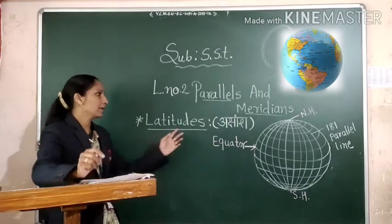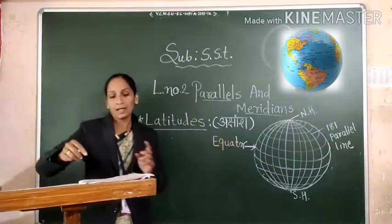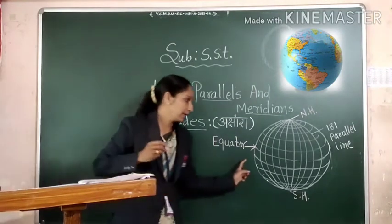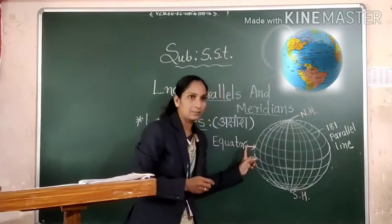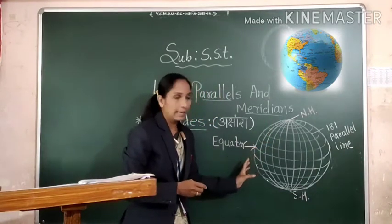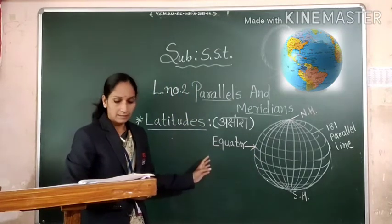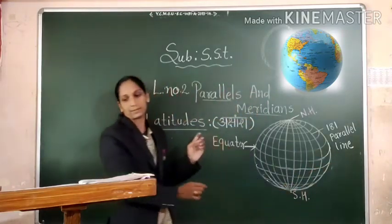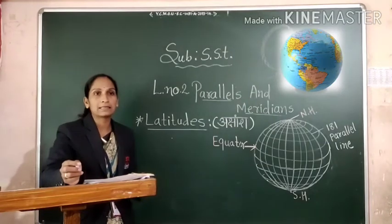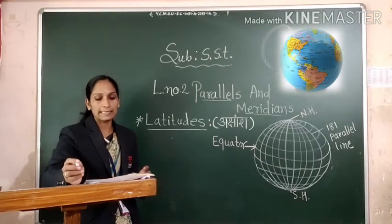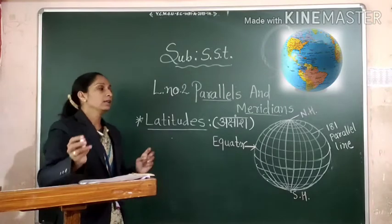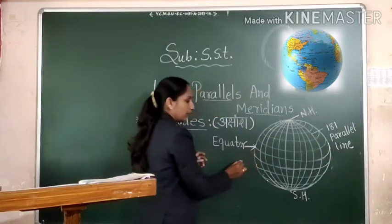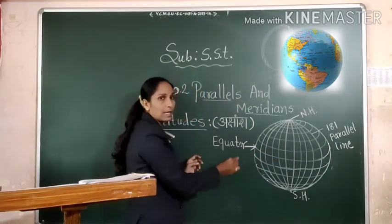Latitudes, it means akshams. You can see here, look at the globe. The full circle that draws from east to west. Here I draw the diagram. You can see the full circle and these lines run from east to west are called parallels or lines of latitudes. Those lines run from east to west are called parallels or latitudes.